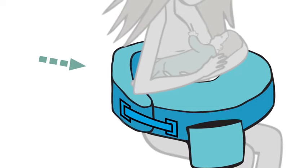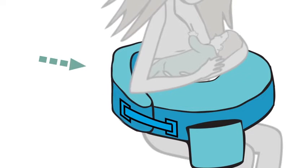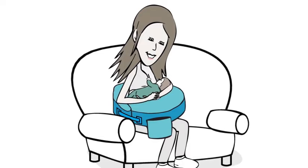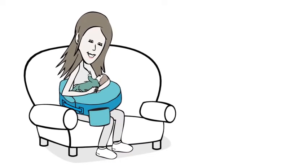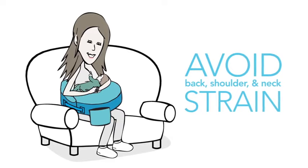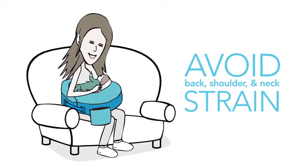And its contoured back support helps moms sit up straight and maintain good body alignment. With all the hours spent breastfeeding each day, it's critical in avoiding back, shoulder, and neck strain associated with leaning over to feed.